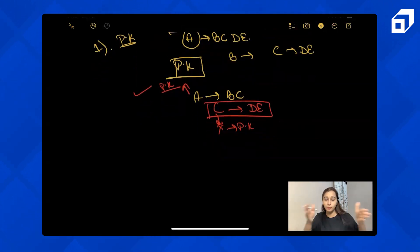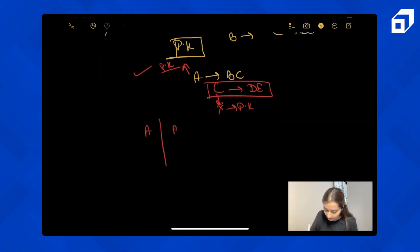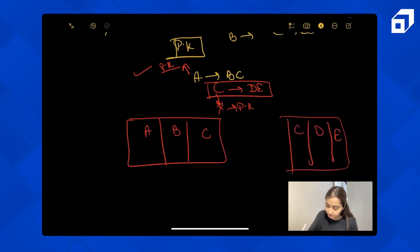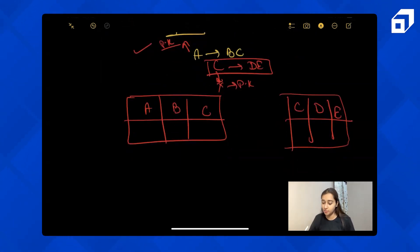So we have to normalize it. To normalize it, let's decompose our dependencies. The very first table can be A, B, C. Second table can be C, D, and E. So this is the decomposed table.